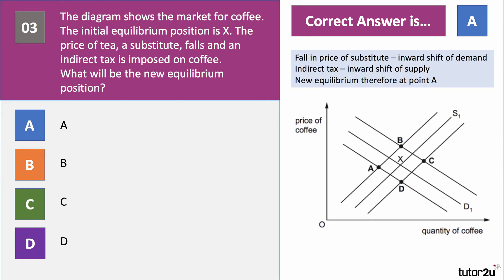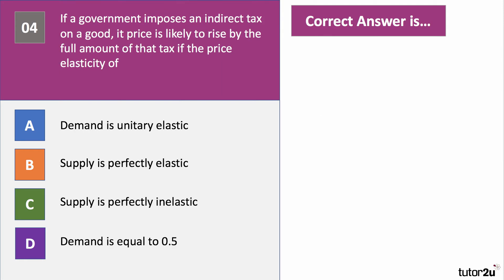Question four. If a government imposes an indirect tax on a good, its price is likely to rise by the full amount of the tax if the price elasticity of supply is what? The best way to approach this is to visualise a diagram. When will the government tax cause the price to rise by the full amount? Have a go at question four.